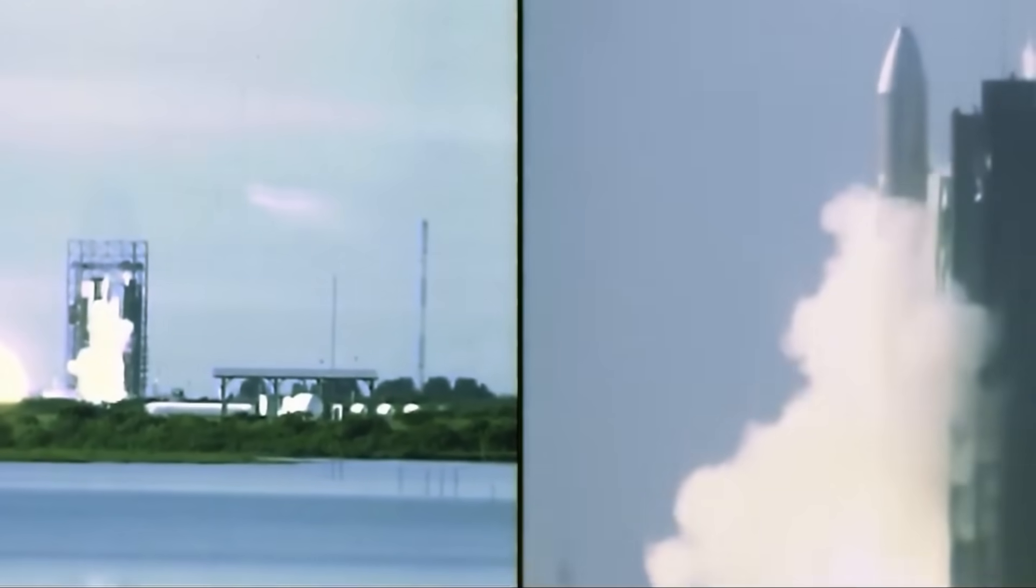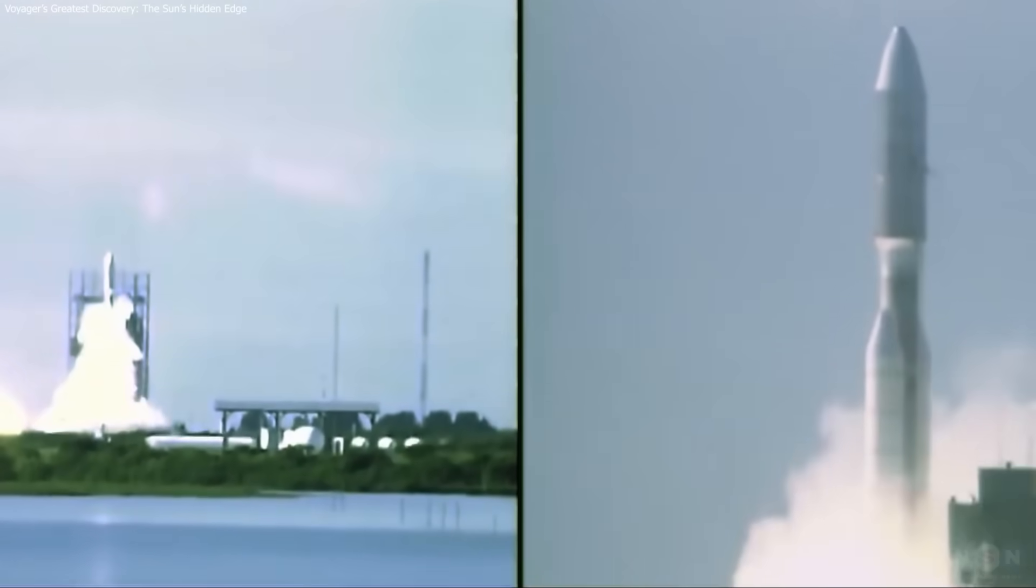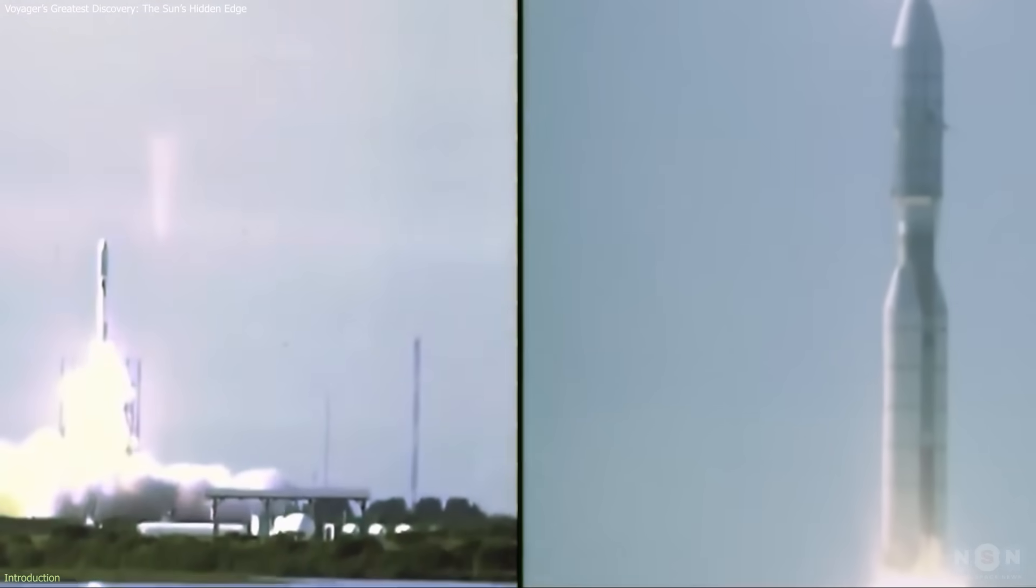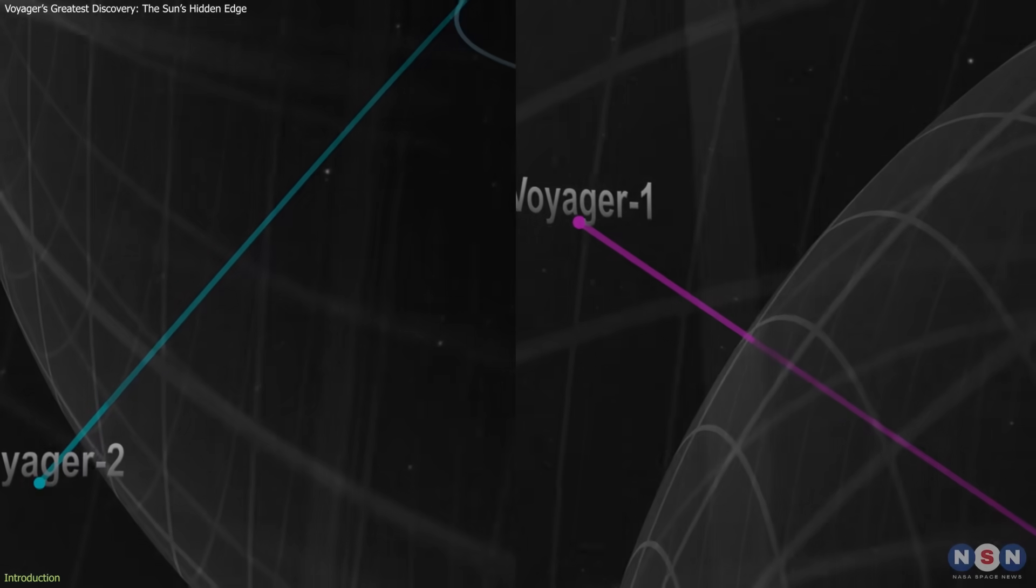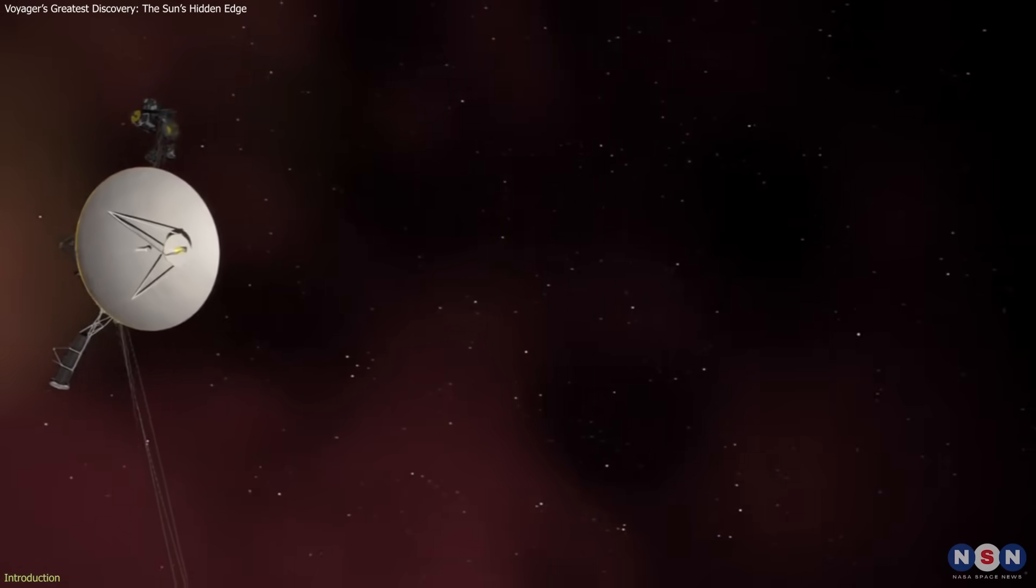In 1977, NASA launched the Voyager spacecraft to explore the outer solar system. Decades later, both probes crossed its farthest boundary, and what they found stunned scientists.